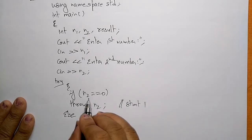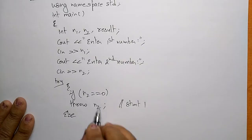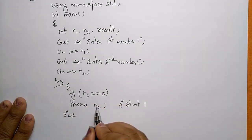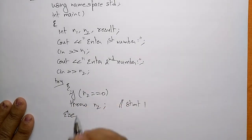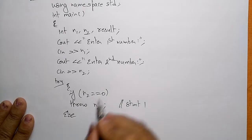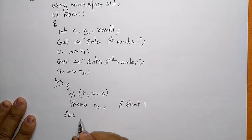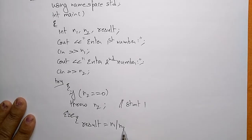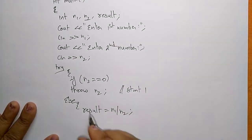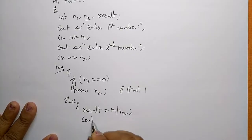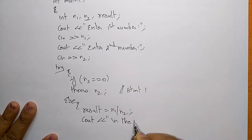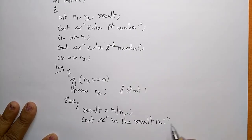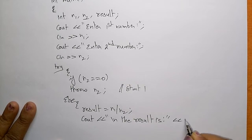Whenever n2 is zero, it throws n2 — that value will be caught by the catch block. If n2 is not zero, this statement executes: result = n1 / n2. Then cout prints the result.